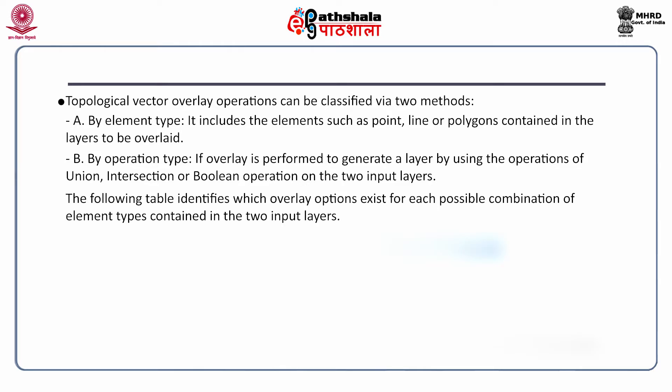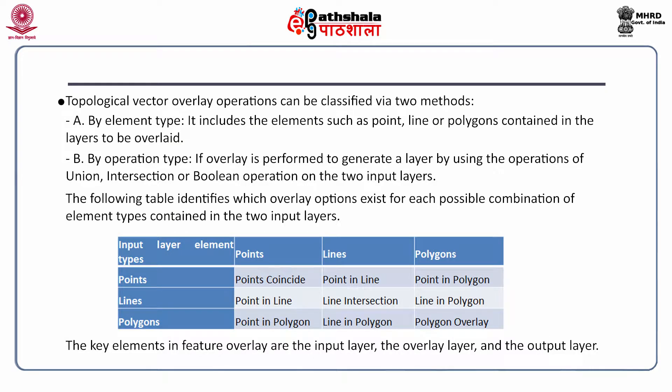The following table identifies which overlay options exist for each possible combination of element types in the two input layers. For example, the input layer types could be point, line or polygons. If two points are overlaid then the possibility is that the points coincide. For points and lines the possible combination is point-in-line, and for polygon it is point-in-polygon. If the input layer is a line then we can have combinations of point-in-line, line intersection or line-in-polygon. If the input layer is a polygon, the combinations could be point-in-polygon, line-in-polygon or polygon overlay. The key elements in feature overlay are the input layer, the overlay layer and the output layer.